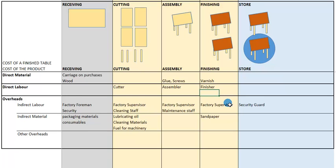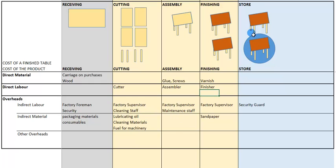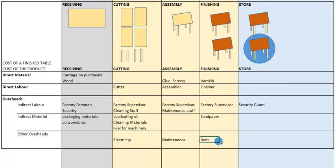The last category is other overheads — all the extra costs that didn't fall within material or labor, direct or indirect. Running the factory requires more than just wood and workers. We need to pay for the facility itself, so rental costs are included, as well as water and electricity, and maintenance of the facility.